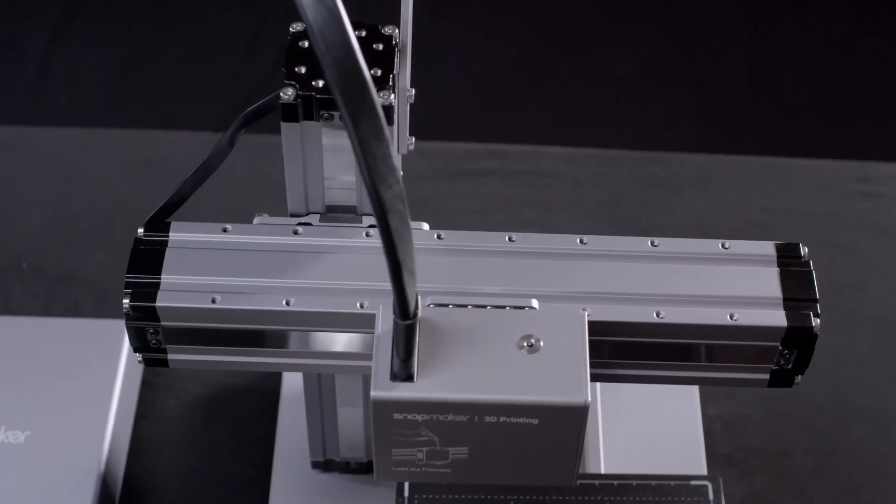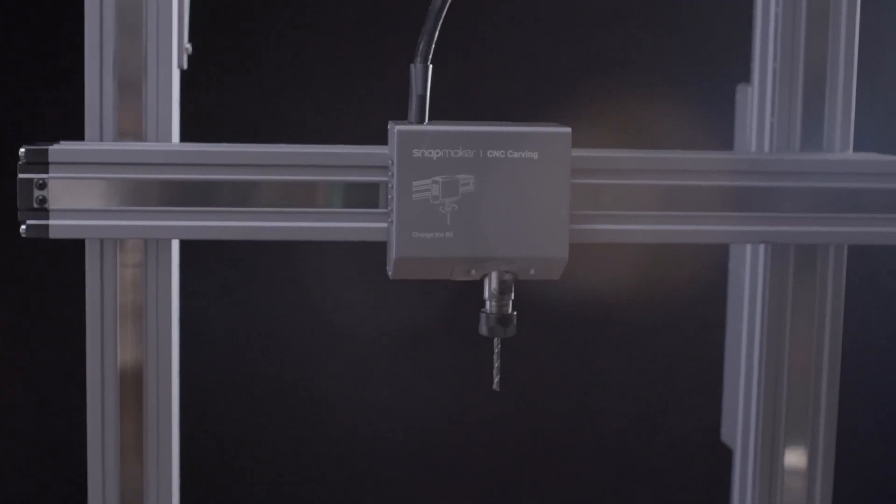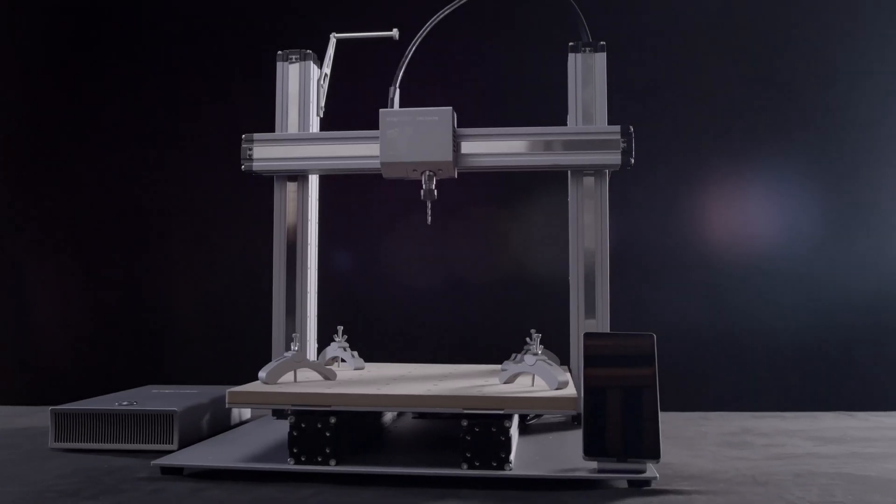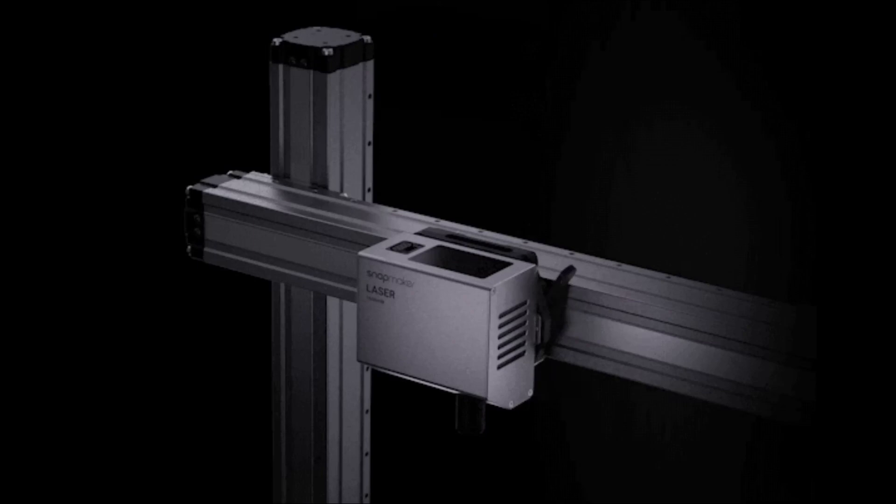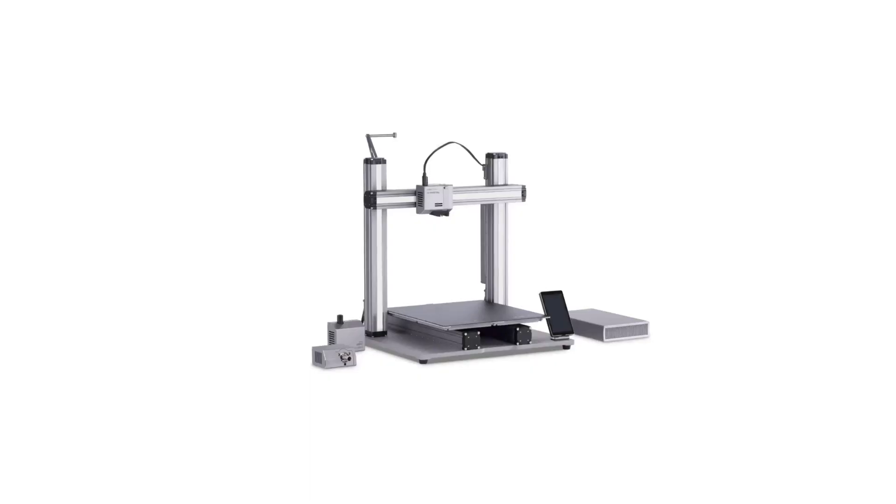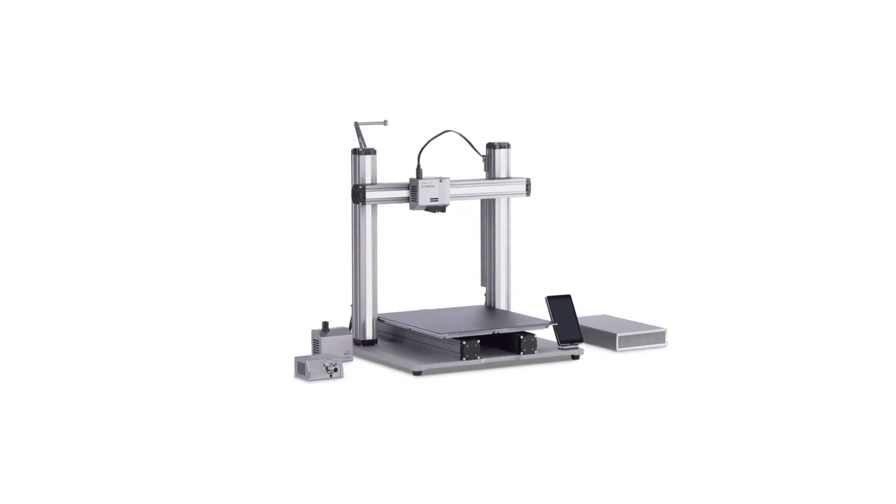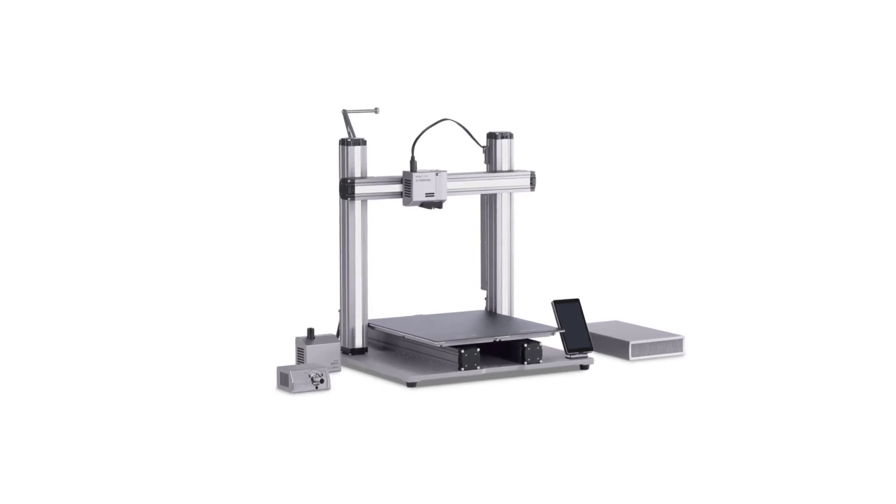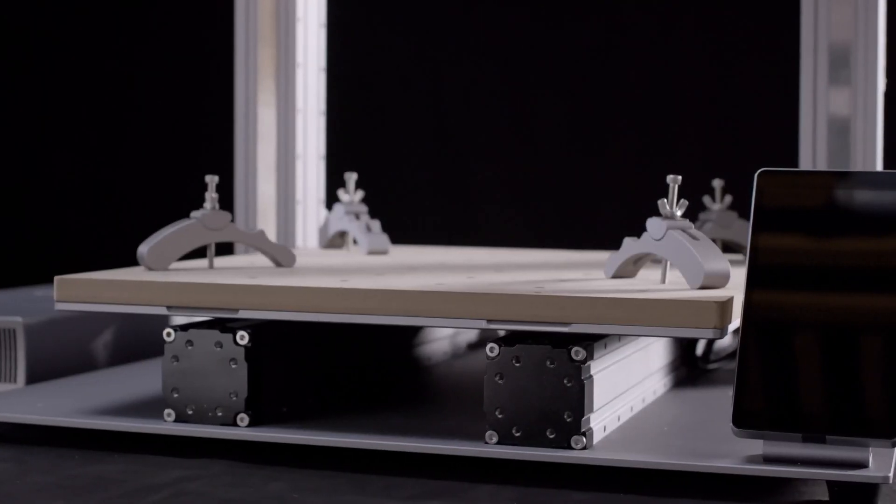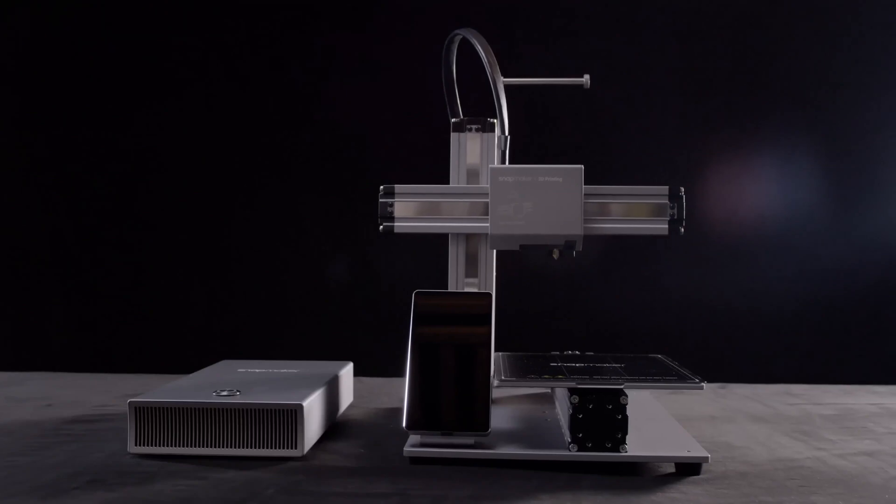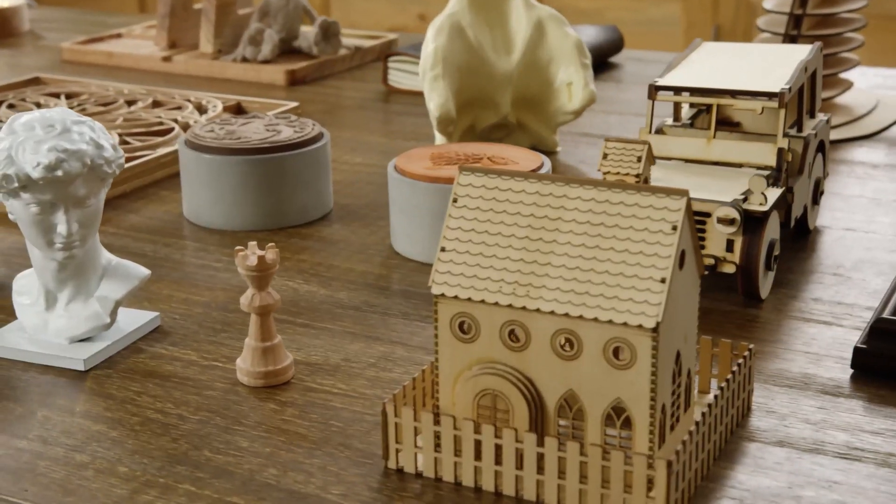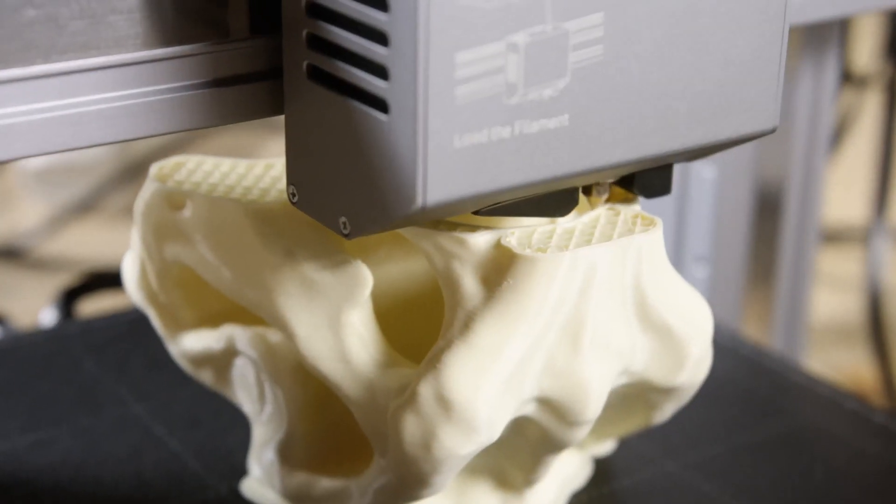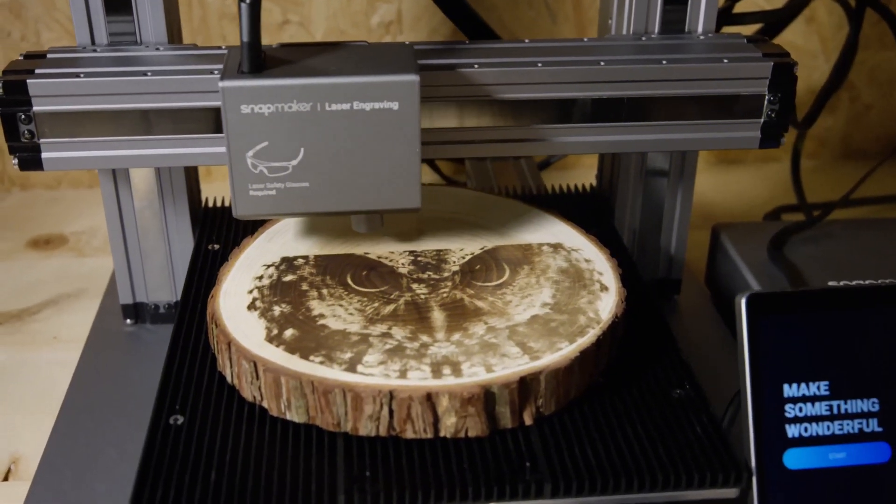This isn't your average 3D printer, it's a modular genius. With the ability to seamlessly switch between 3D printing, laser engraving, and CNC carving, the Snapmaker 2.0 is like having three machines in one sleek package. Snapmaker 2.0, a 350T modular 3-in-1 3D printer, unlocks your full creative potential. From 3D printing to laser engraving, cutting, and CNC carving. Smarter, faster, larger, and more powerful than ever before.